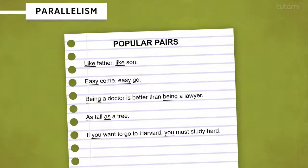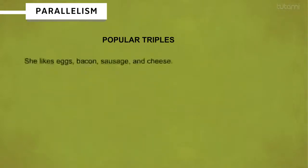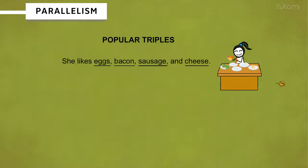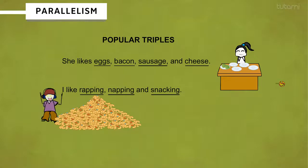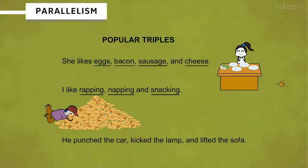"If you want to go to Harvard, you must study hard." A lot of times the SAT will throw in 'you' and 'one' and mix the two, but remember to keep the pairs: you/you, one/one. And: "First of all, second of all" — more of a continuation. Some popular triples: "She likes eggs, bacon, sausage, and cheese." Or "I like rapping, napping, and snacking." Sometimes it might be a pair of verbed nouns, like "lifted the sofa" — verbed the noun, verbed the noun, and verbed the noun.